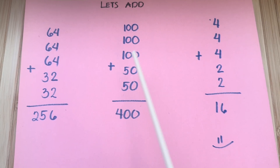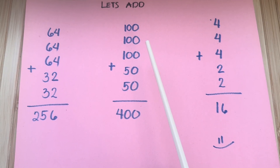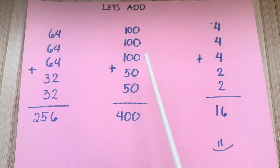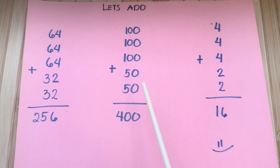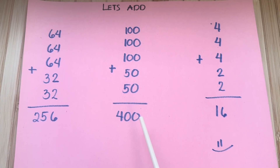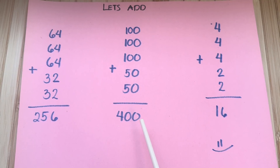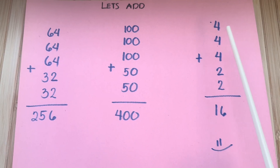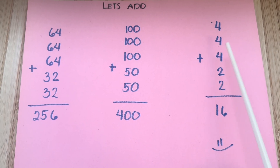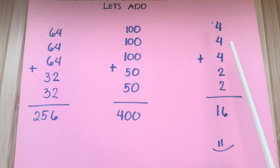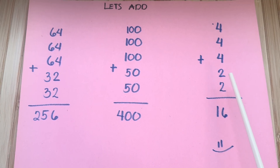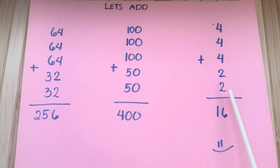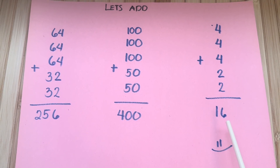100 plus 100 plus 100 plus 50 plus 50 is equals to 400. Here's another example: 4 plus 4 plus 4 plus 2 plus another 2 is equals to 16.